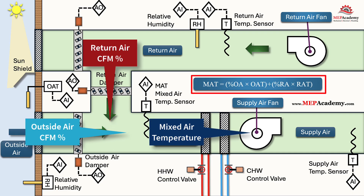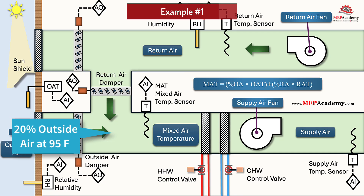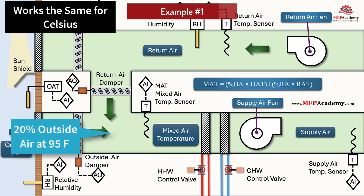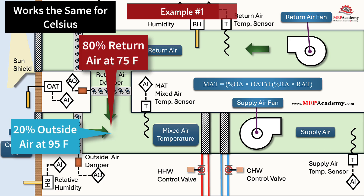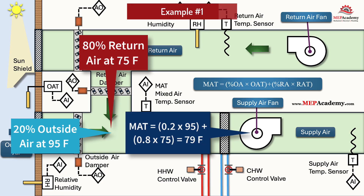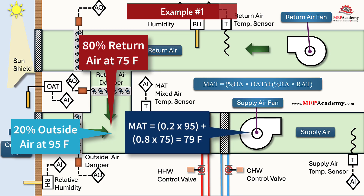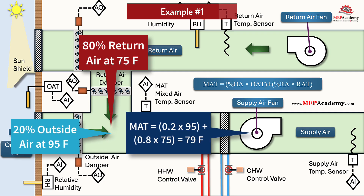Example 1 — 20% outside air: Outside air = 95°F, return air = 75°F, outside air = 20%, return air = 80% of total air volume entering the mixing box. Mixed air temperature = (0.2 × 95) + (0.8 × 75) = 19 + 60 = 79°F. The coil sees 79°F entering air.